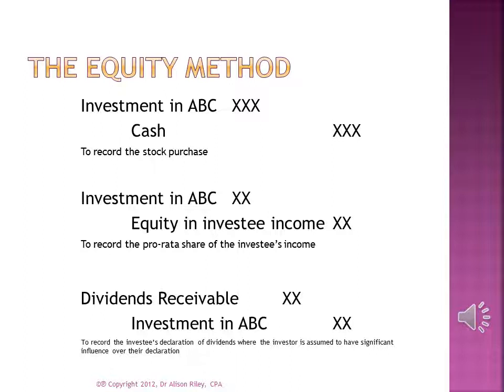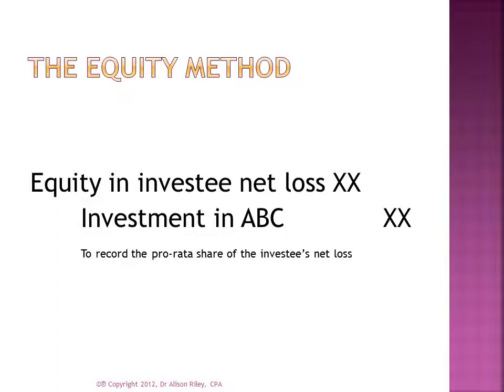In a similar vein, when the investee declares dividends, it is assumed that the investor has the ability to command significant influence over the dividend decision. For this reason, it is considered inappropriate for the investor to recognize income from the receipt of investee dividends. Instead, the investor recognizes a dividend receivable as an asset and reduces the carrying value of the investment account by its pro-rata share of the dividends to be received. If the investee were to report a net loss for the period, the investor recognizes its pro-rata share of the net loss by debiting a loss account and decreasing the carrying value of the investment account.